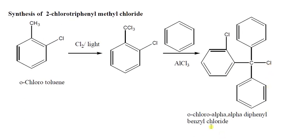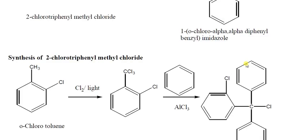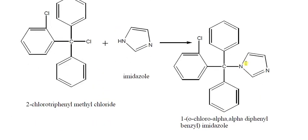This compound — 2-chlorotriphenylmethyl chloride — is also known as ortho-chloro-alpha,alpha-diphenylbenzyl chloride, or a type of benzoyl chloride. This is the key intermediate that further reacts with imidazole to form clotrimazole as an antifungal agent.